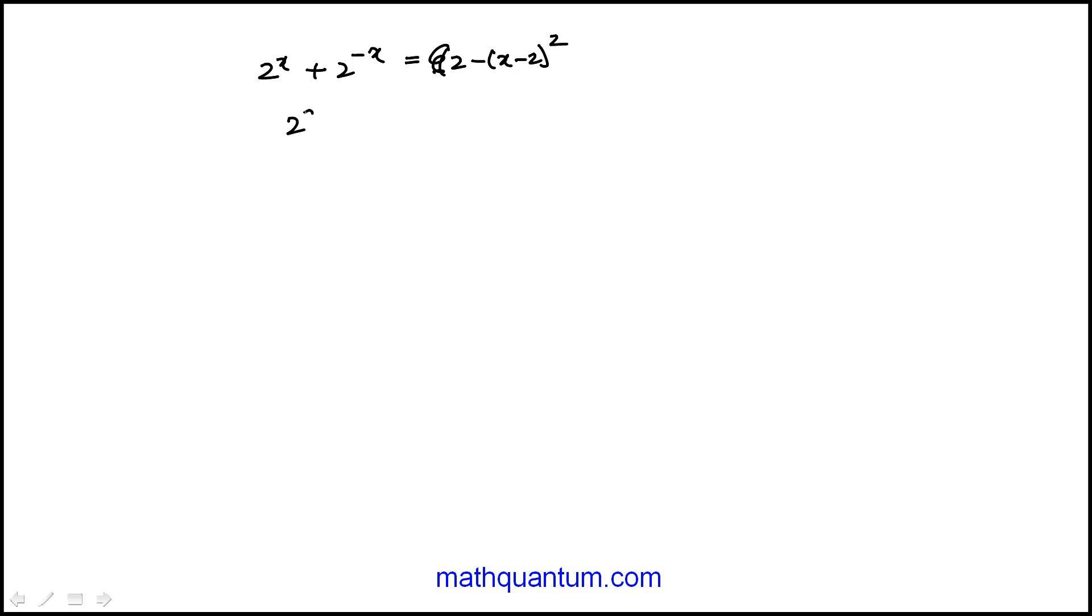Multiply by 2 to the x both sides, and this would become 2 to the 2x plus 2 to the x minus 2 to the x times x minus 2 squared, and then plus 1 minus 2 times 2 to the x.